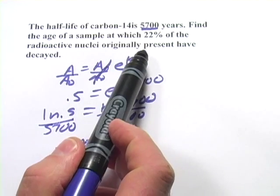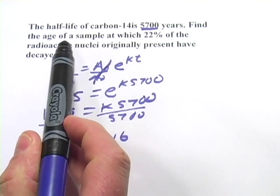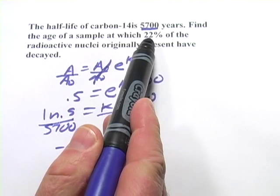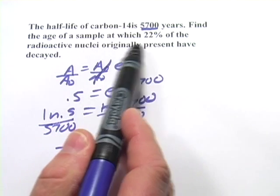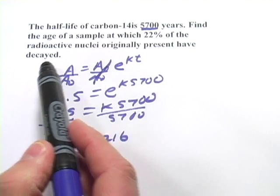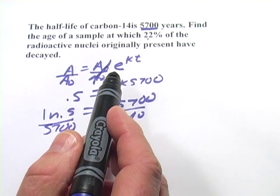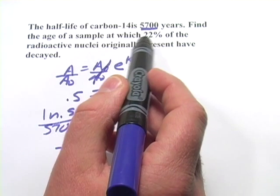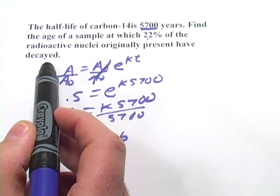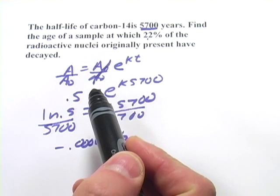Now let's read the rest of this problem. It says, find the age of a sample at which 22% of the radioactive nuclei originally present have decayed. So this is not at the halfway point. What it means is, if 22% have decayed, are gone, then 78% are left.